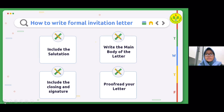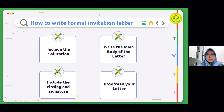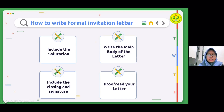If you want recipients to confirm their presence via email or by filling in a form, indicate the deadline by which you expect them to respond. Step nine: proofread your letter. Have a final look at the letter before sending it. Make sure the grammar is correct, punctuation is okay, and there are no spelling errors. Also ensure the text doesn't include incomplete sentences or jargon words.